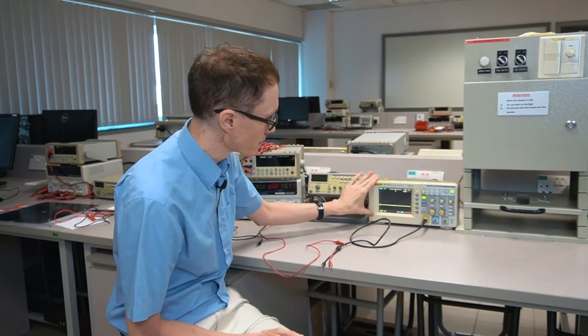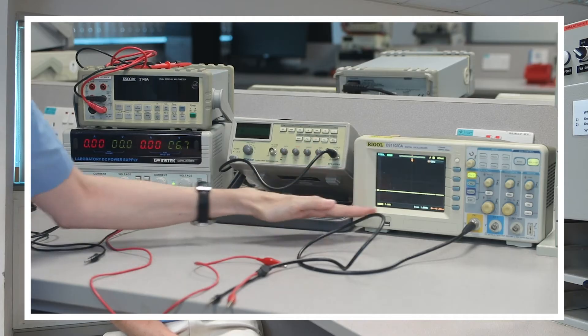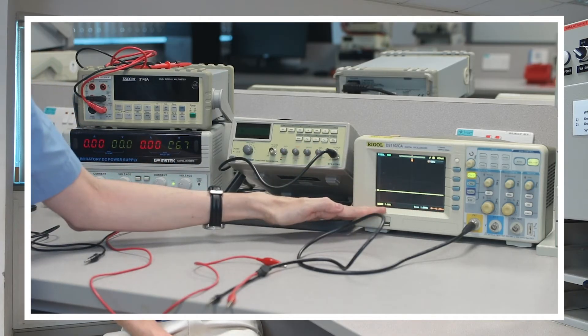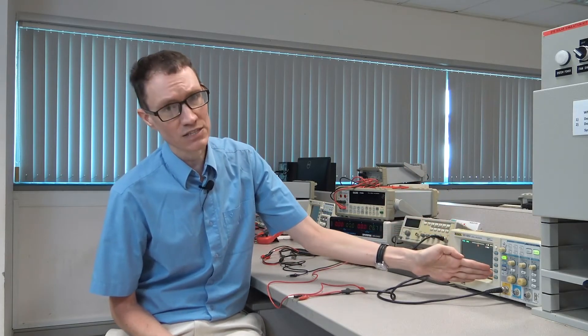So we have a little screen here, and on the vertical axis it's plotting voltage, and on the horizontal axis it's plotting time. The oscilloscope just plots from left to right, and then once it reaches the right side of the screen, it starts over and it just continues to plot over and over again.